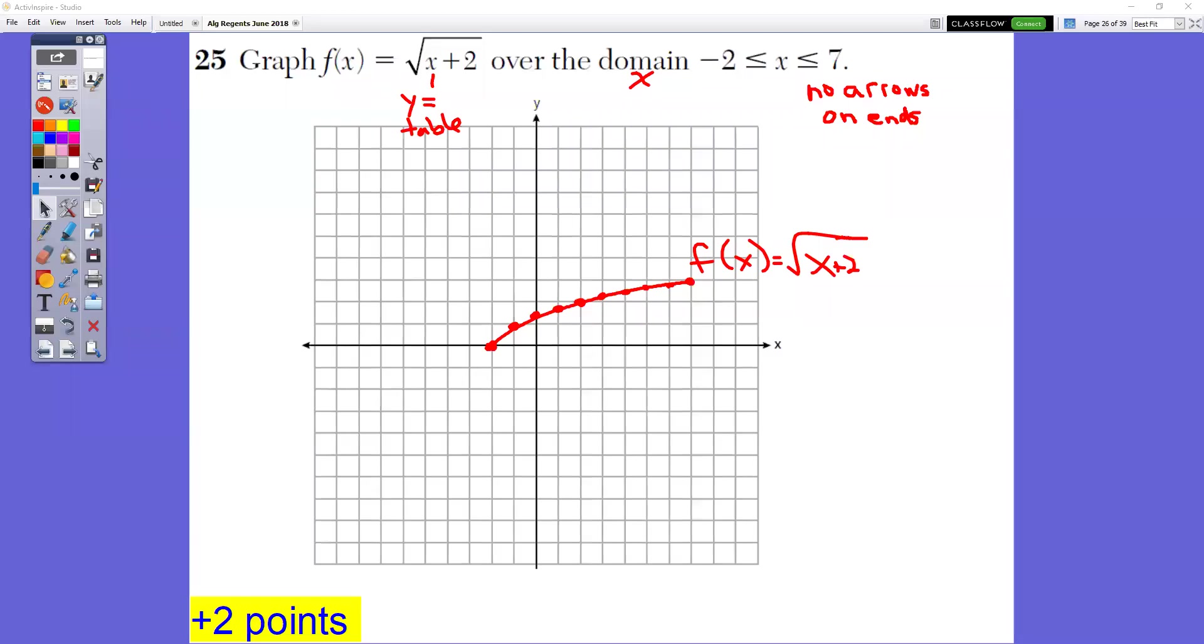This is the answers to the Algebra Regents June 2018 short response. In question number 25, all you need to do is type this into your calculator: y equals the square root of x plus 2. Make sure that your plus 2 is inside underneath your square root symbol and not after it. You only want to graph it from negative 2 to positive 7, and it includes both the negative 2 and the positive 7.